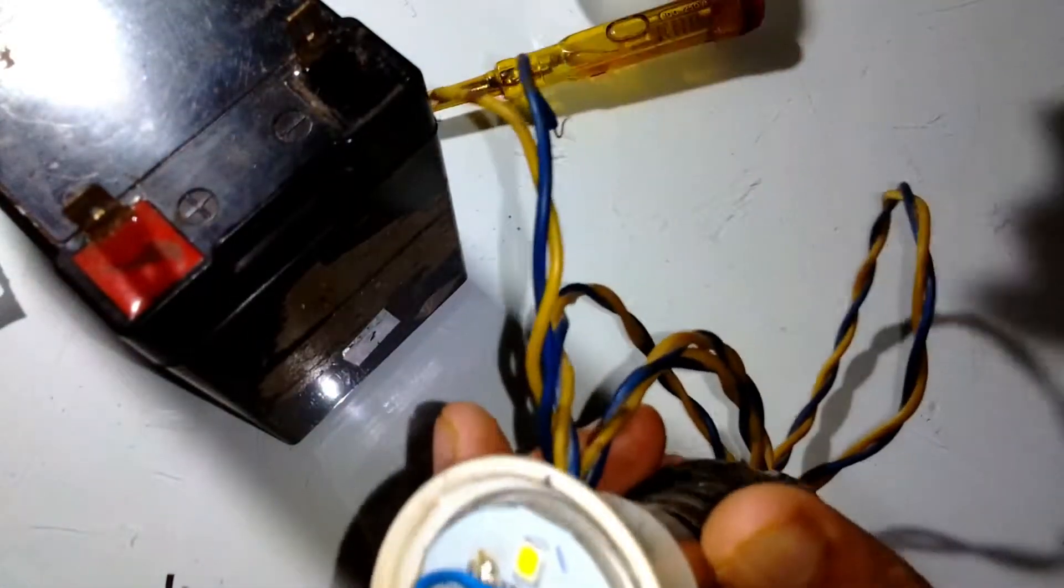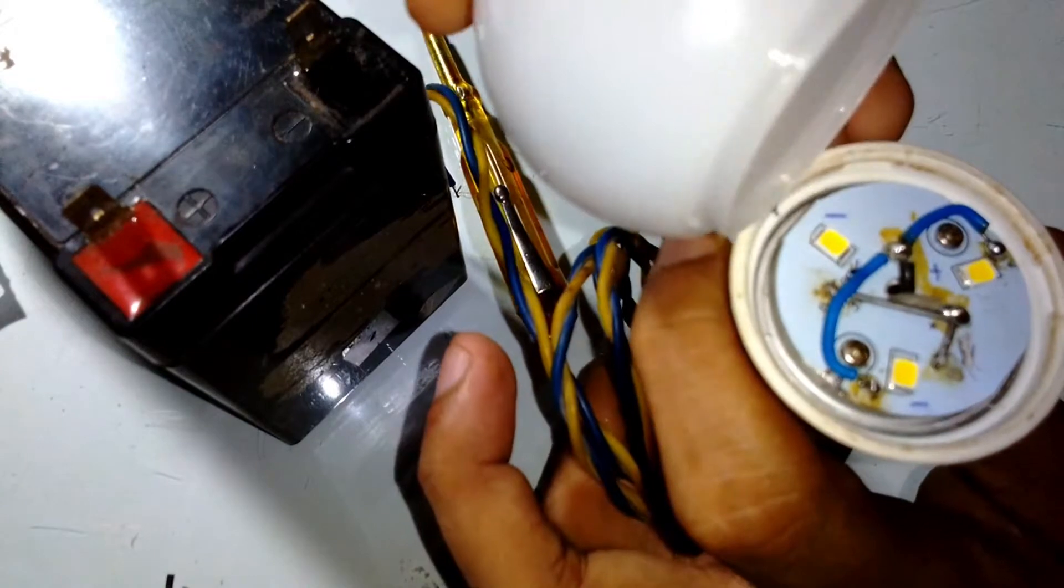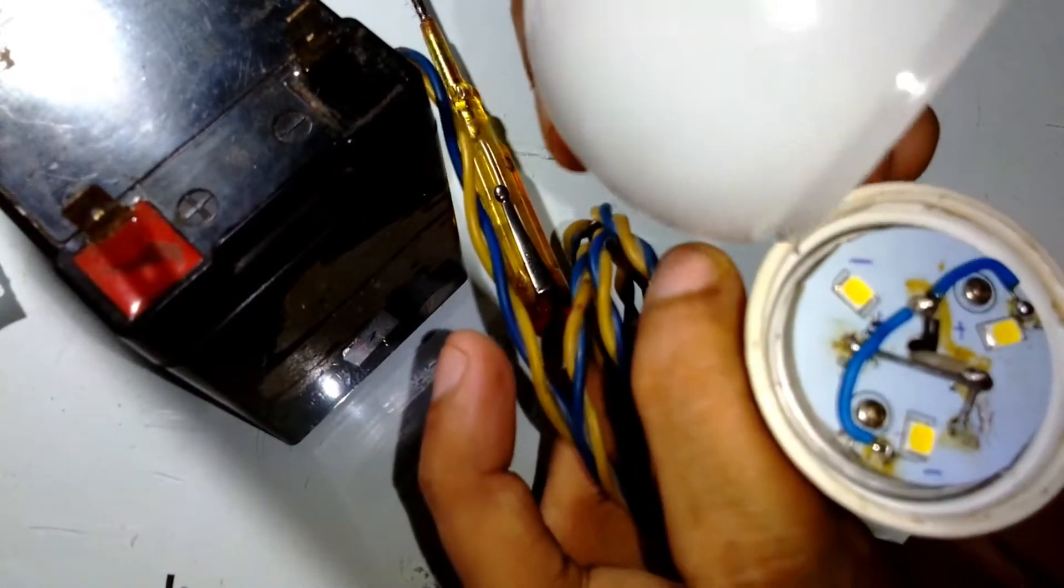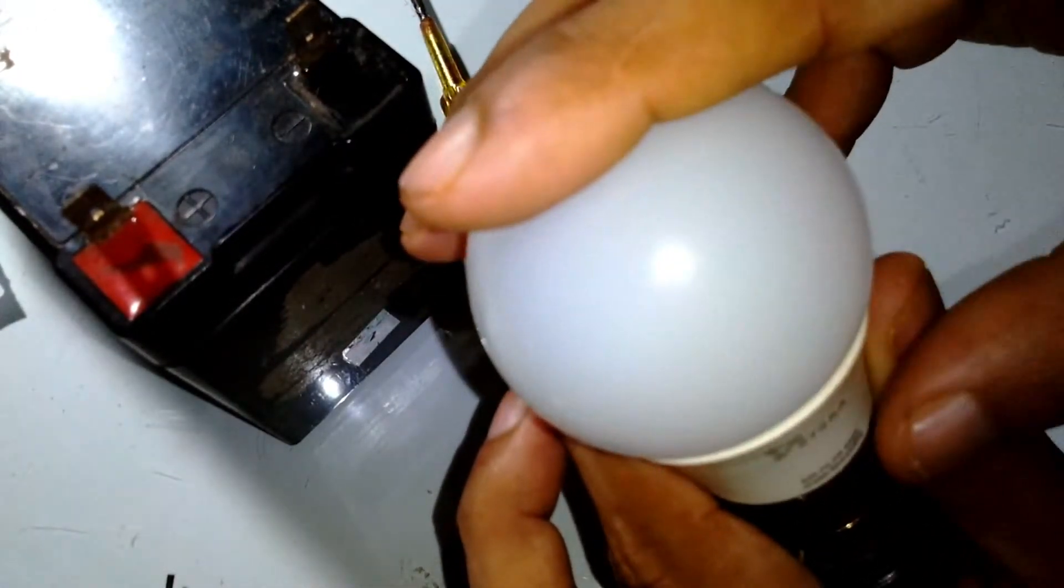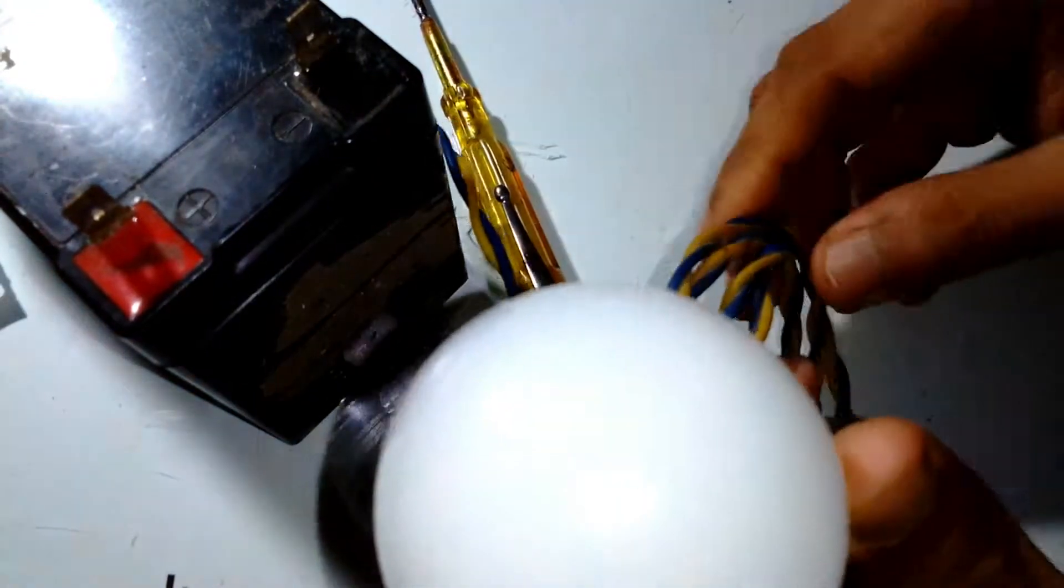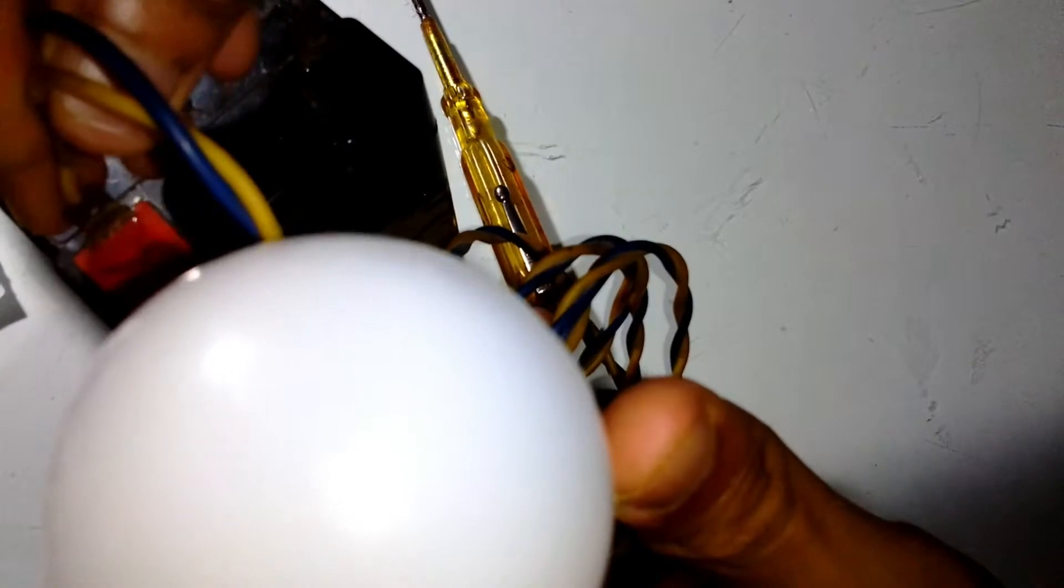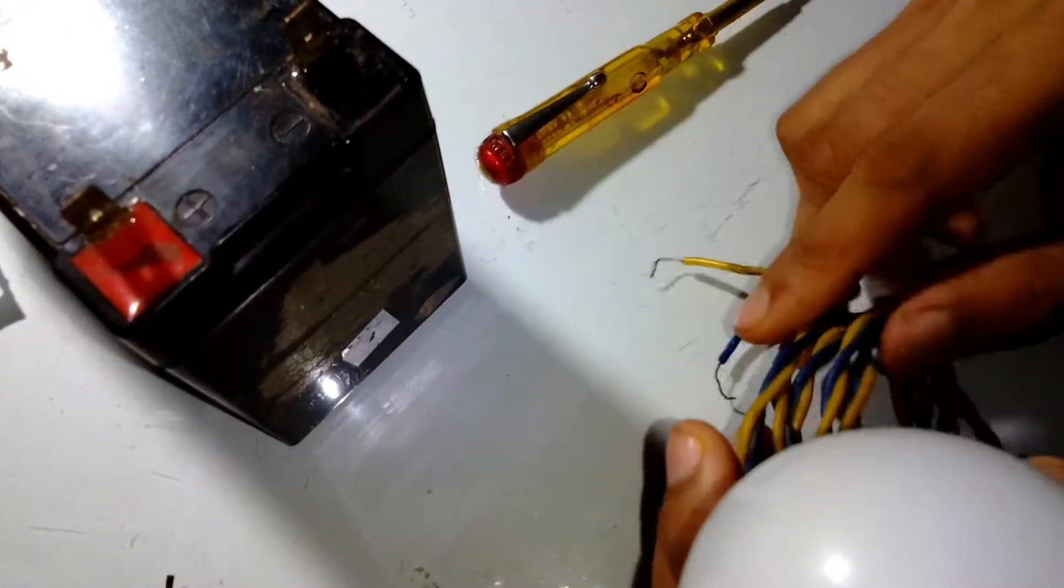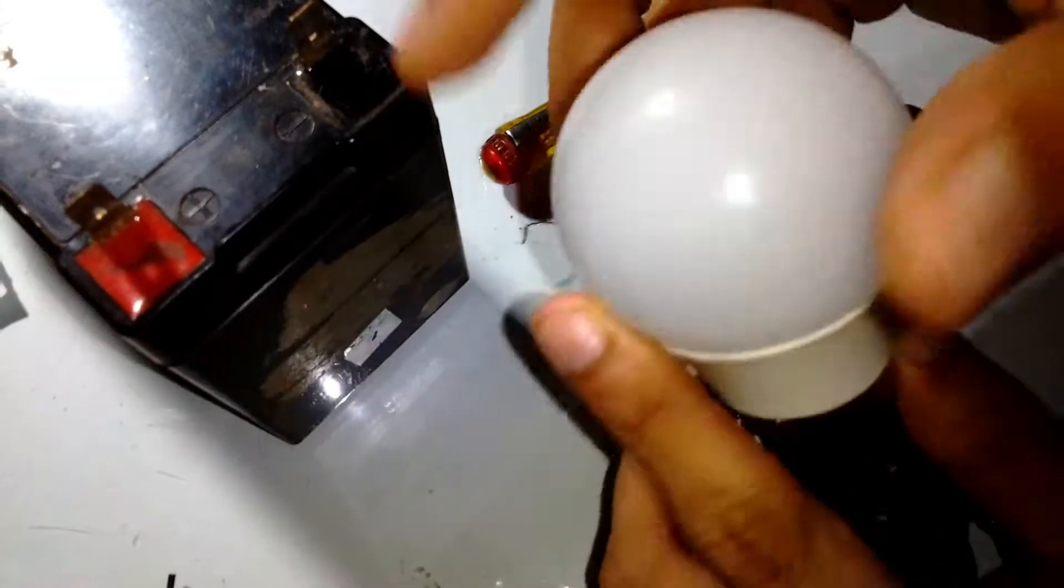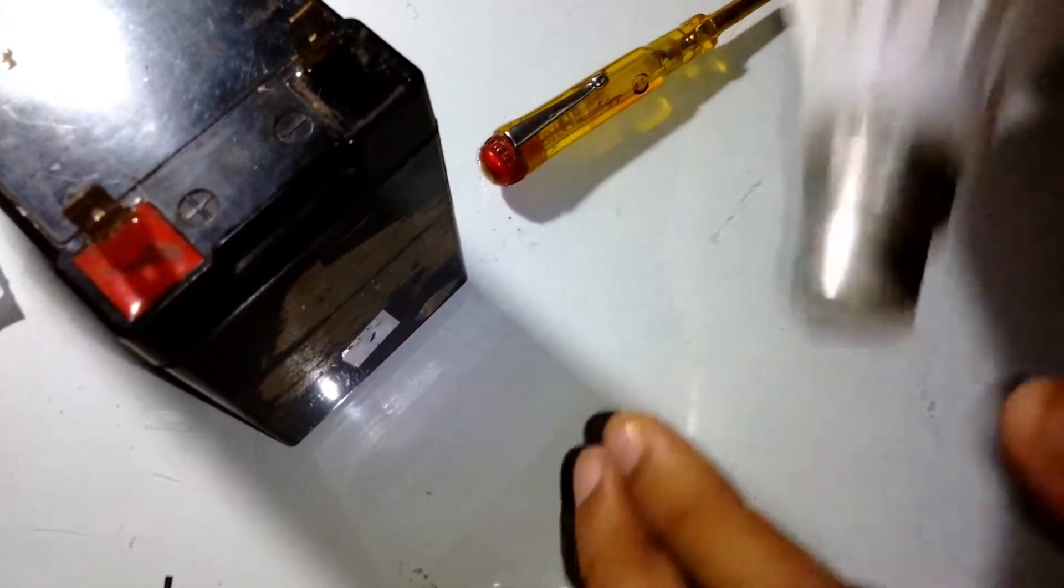After putting the diffuser on top of the bulb, it's going to reduce the sharpness of the LED SMD chips and give a smooth blended light. It's not going to hurt the eyes. The intensity is pretty much comparable to what it was before. Let's keep it aside and now let's begin with the 9 watt LED bulb.